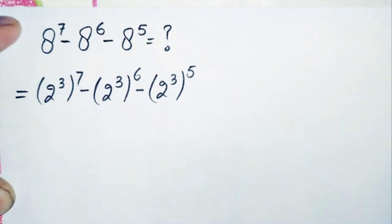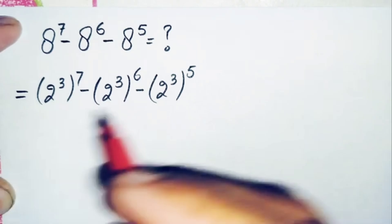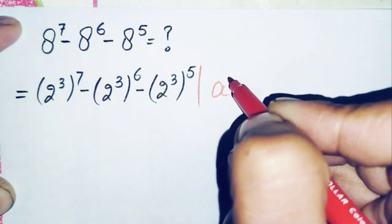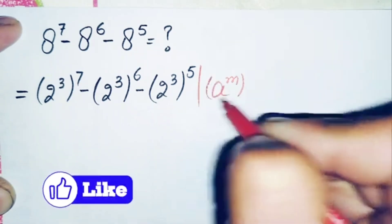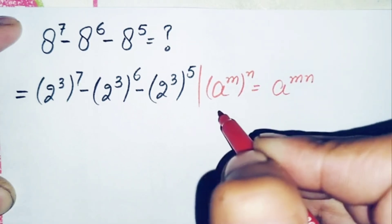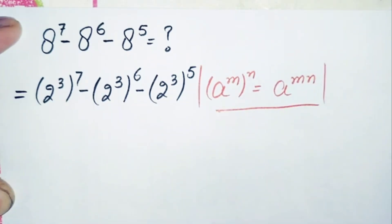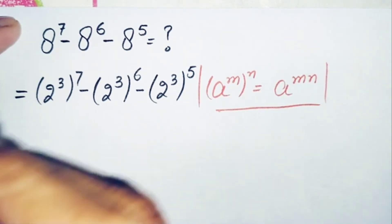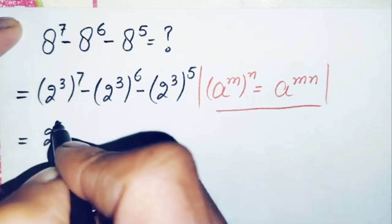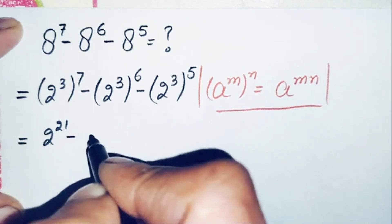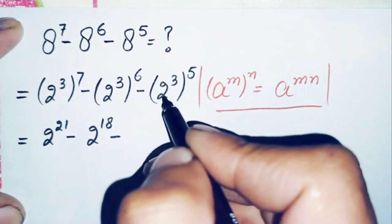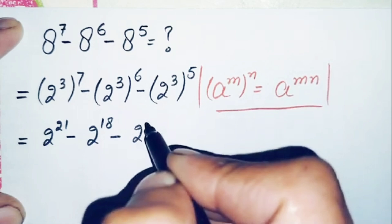Now in all the terms we will use the exponential math property and multiply the powers with each other. The property states: a raised to power m, all raised to power n, can be written as a raised to power m times n. Using this property, this becomes 2 raised to power 21, minus 2 raised to power 18, minus 2 raised to power 15.